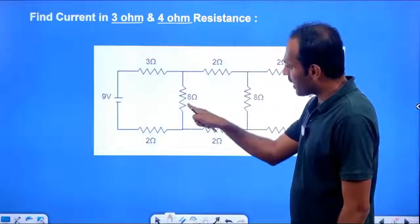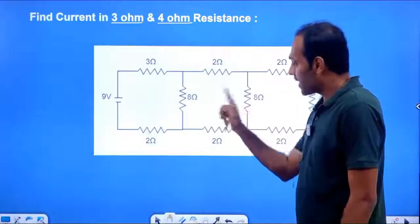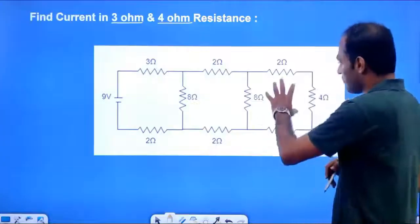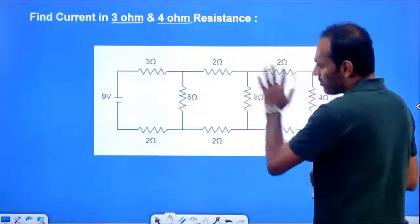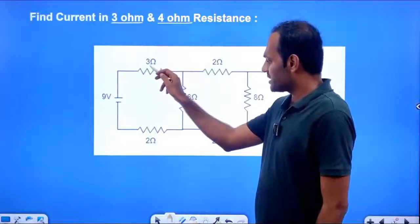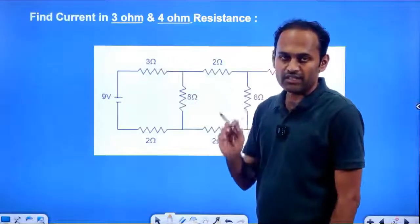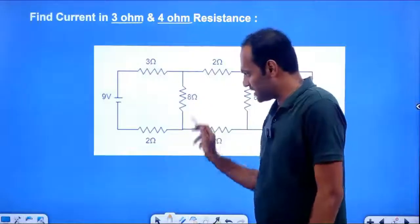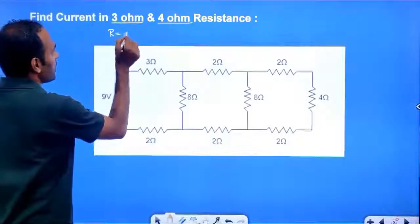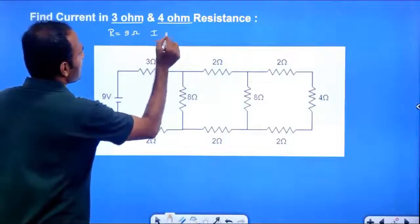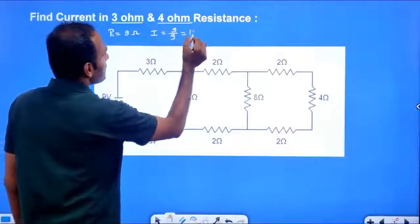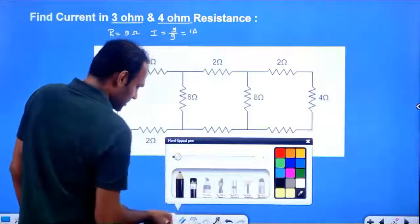That 8 Ohm is in parallel with this 8 Ohm, so effective is 4 Ohm. The overall effective resistance of the circuit is 9 Ohm. The main current is E divided by R: with 9V source and 9 Ohm resistance, current is 9 divided by 9 equals 1A.